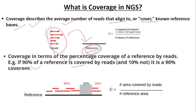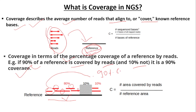As an example, here we have a reference sequence and these are read sequences. If these reads cover 90% of the reference on average, that is called 90% coverage. The remaining 10% of the reference is not covered — as you can see, this part is not covered, but 90% is covered.